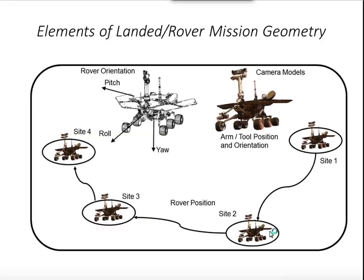Just a couple of slides to show you the difference between landed missions and orbital missions. For a rover mission — this is a model of one of the MER rovers — the spacecraft moves across the surface of the planet and you need to specify its location as a function of time. Typically for U.S. rover missions, a site is defined relative to the previous site and there's a chain backwards. You need to specify the orientation of the rover as a function of time. We have classes to specify camera models to do analysis of stereo processing and other processing related to camera pointing.